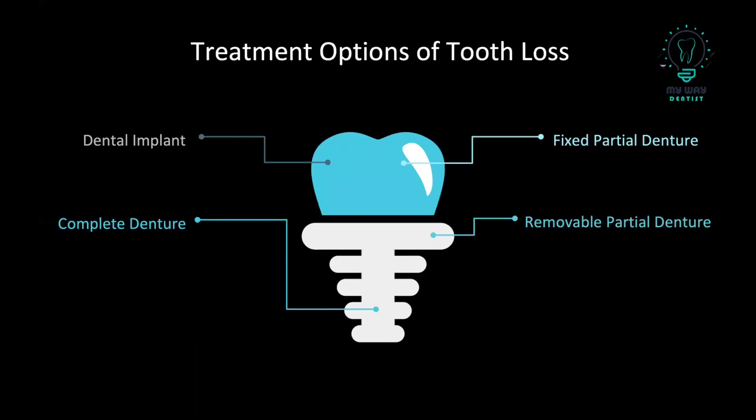Of course, ideally you would say that the dental implant is the best treatment, but we need to always remember that not all cases or patients are suitable for dental implants, whether because the patient cannot afford it, or due to uncontrolled systemic diseases, and there are many other factors. So you will look to the other options, which are fixed partial denture, removable partial denture, or complete denture if the patient has a fully edentulous arch.